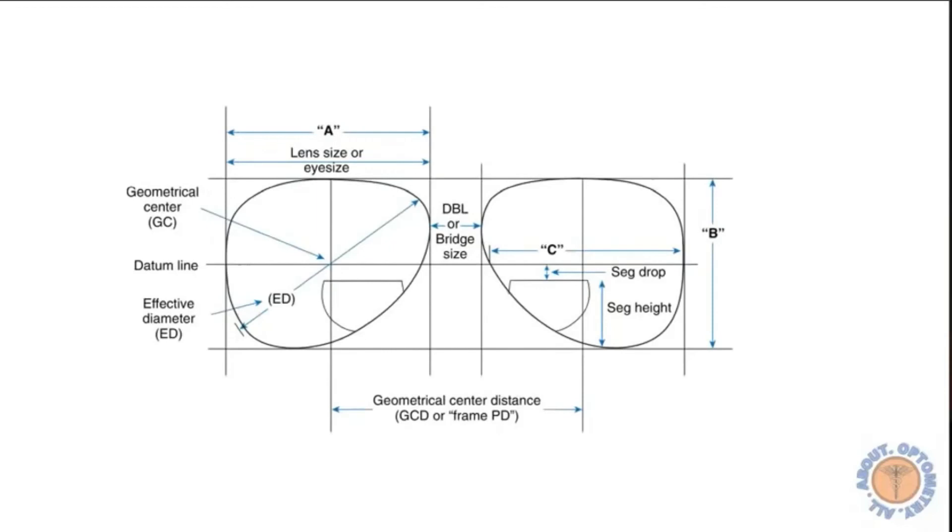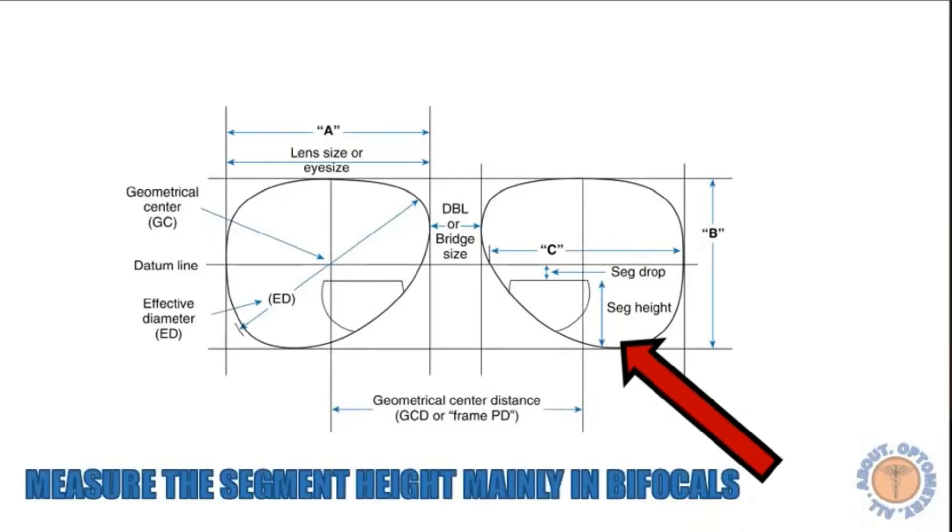Let's go back to the boxing system diagram again and take a look. The segment height essentially that you see right here is the length at which your bifocal lenses are generally fitted. And interestingly, the segment height if above the datum line is called a segment raise and if it is below the datum line is called a segment drop.